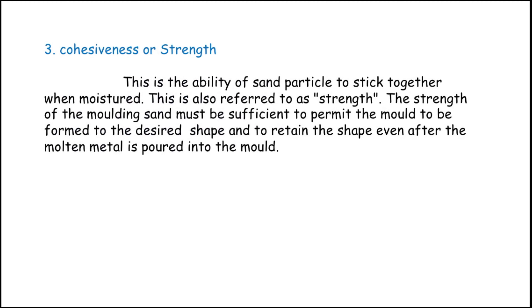Coarseness or strength: this is the ability of sand particles to stick together when moisture is present, also referred to as strength. The strength of the mold sand must be sufficient to permit the mold to be formed to the desired shape and to retain that shape even after molten metal is poured. If strength is insufficient, the mold will be destroyed when molten metal is poured.